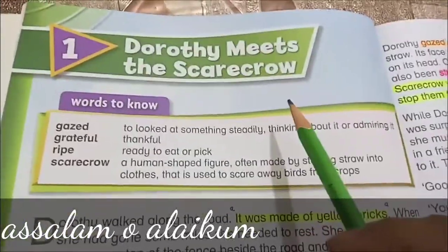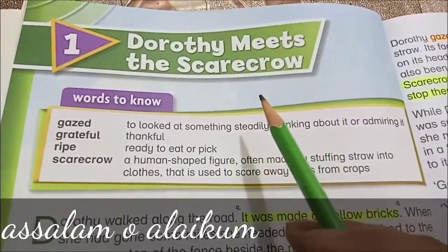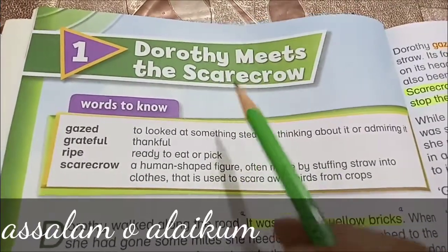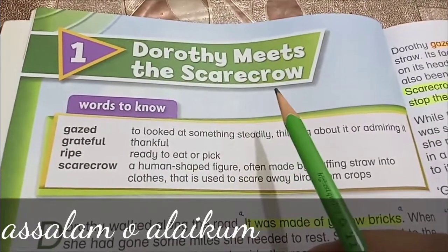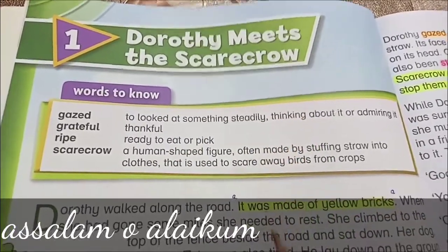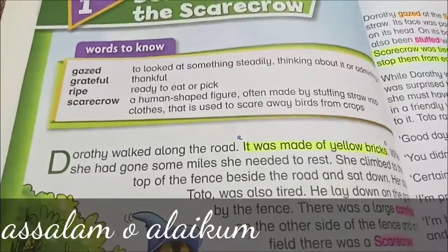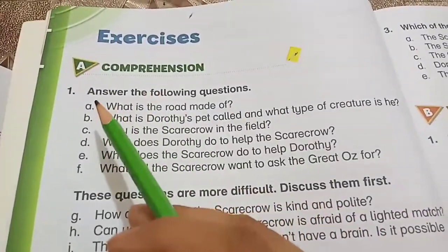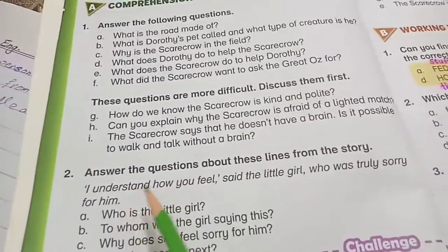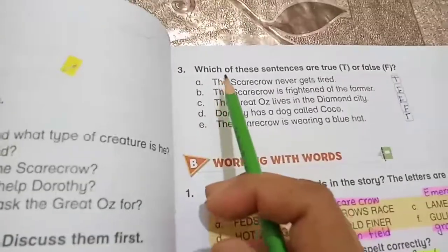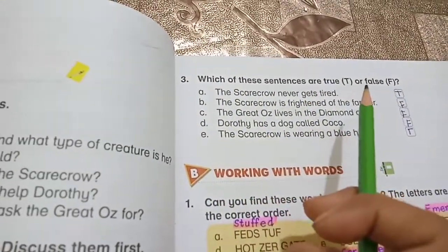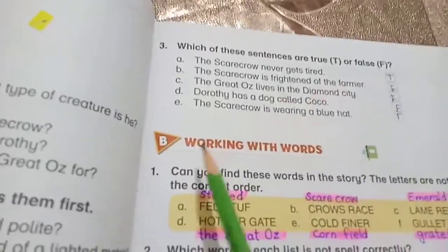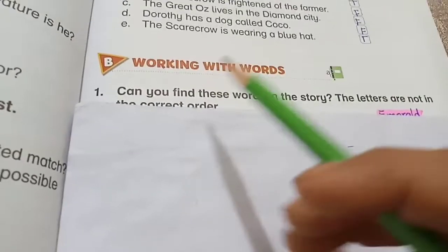Bismillahirrahmanirrahim. Assalamu alaikum students, how are you all? I hope you are all fine. As you know, we are revising chapter number one, 'Dorothy Meets the Scarecrow.' We have completed its reading with vocabulary, the comprehension part one (answer the following questions), part two (questions about lines from the story), and part three (true or false). Today we are going to complete part B, which is working with words.